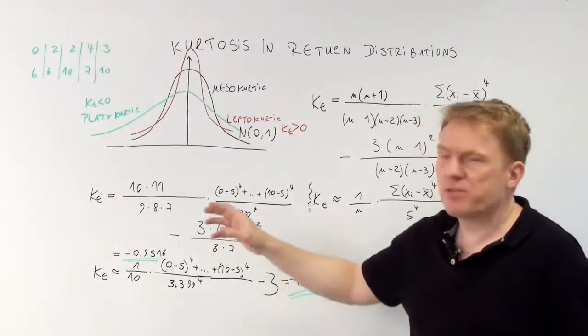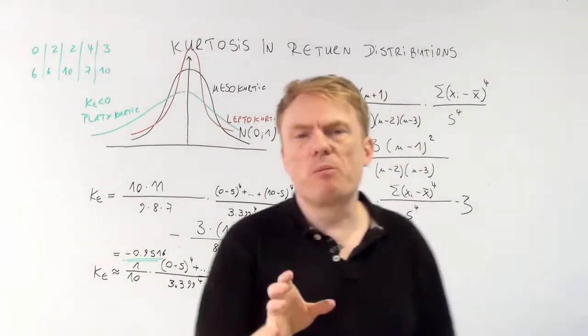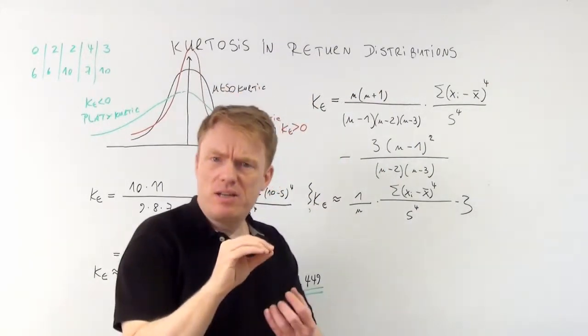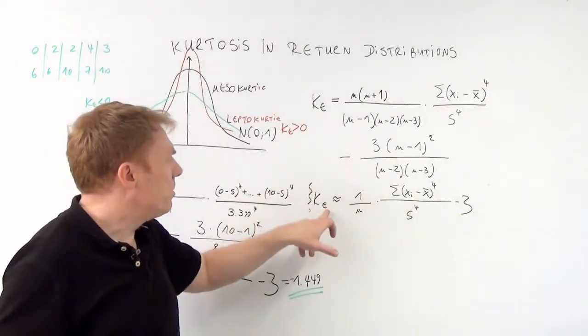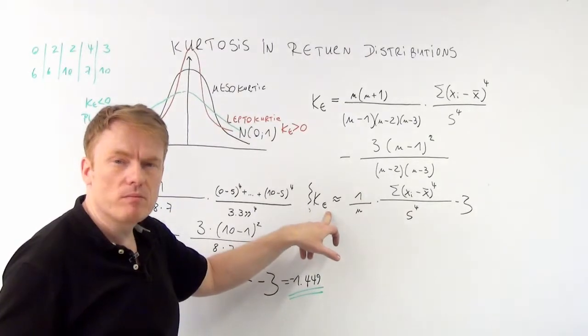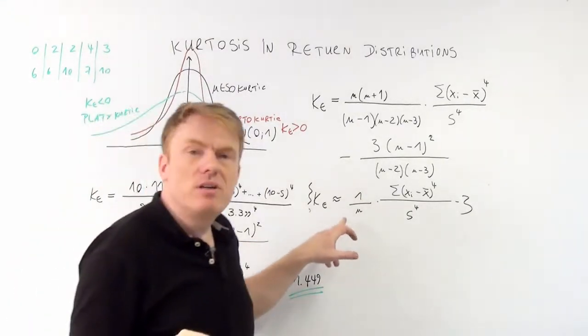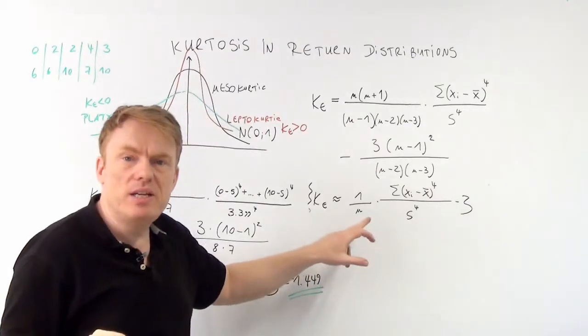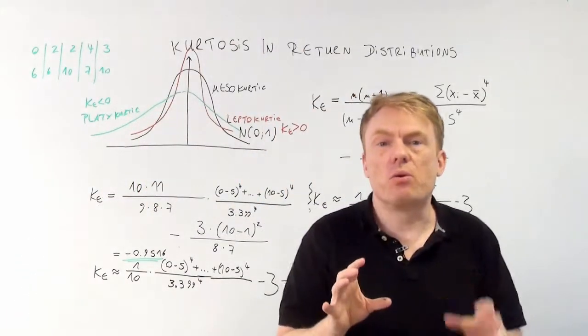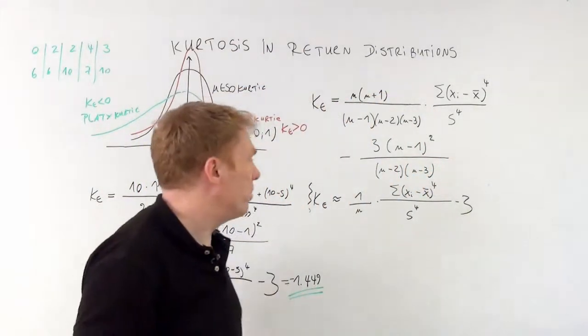There is another formula. As the sample size n grows, we could use this one here. The larger the n, the better this result indicates the kurtosis or excess kurtosis.